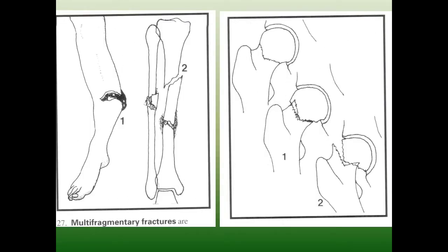A double fracture — fracture at two levels, both lower and upper — is not very common but is considered severe. Healing problems are expected because blood supply to the intermediate fragment is compromised from both sides, leaving it without adequate blood supply.